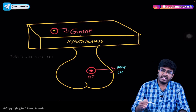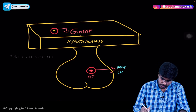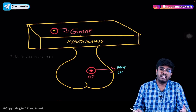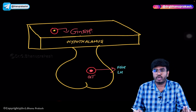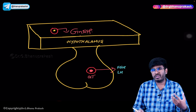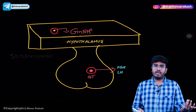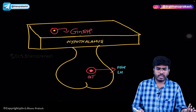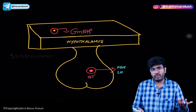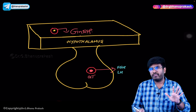Whenever GnRH acts on the gonadotropes, FSH and LH are produced. FSH helps in follicular development and production of estrogen, while LH helps in ovulation as well as progesterone production. By ovulation, there will be a ruptured Graafian follicle, and that follicle under the influence of LH is going to produce progesterone. We discussed all these things in the previous video.